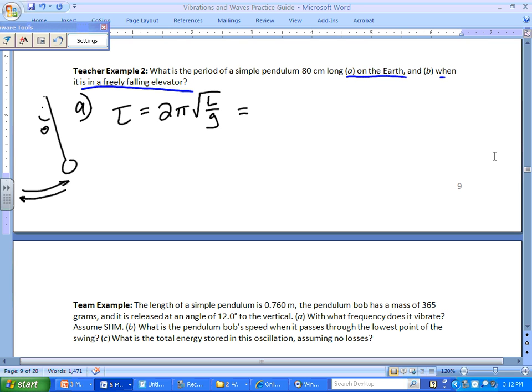So we just plug in our values because we have L and we have g. Certainly 2 pi is numerical. Just make sure that you're in meters, so 0.8 meters divided by g is 9.8 meters per second squared. So then we get a period of about 1.8 seconds. A is done.